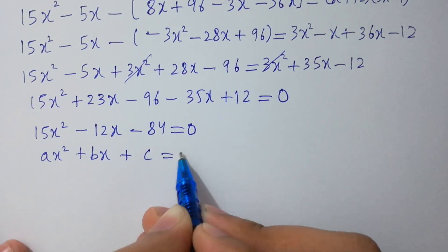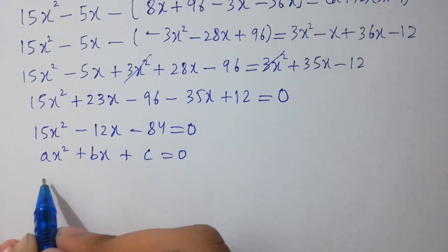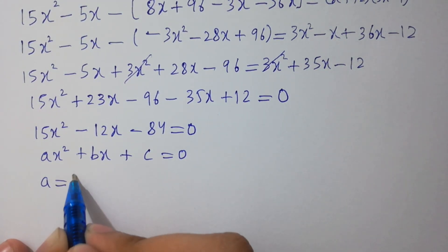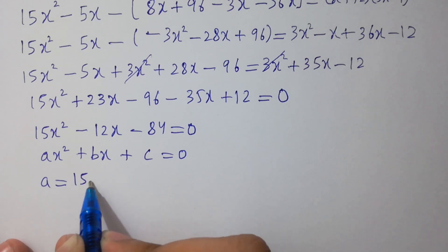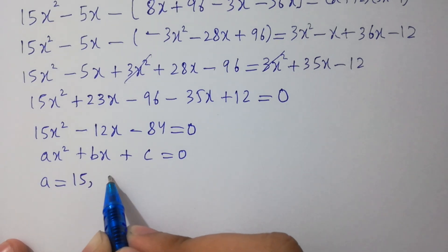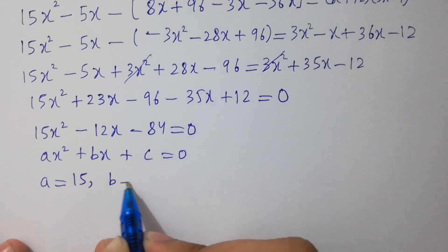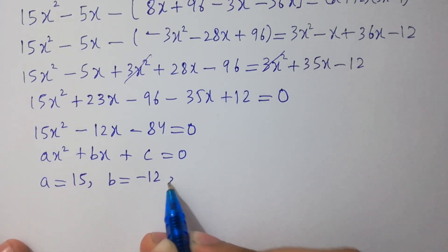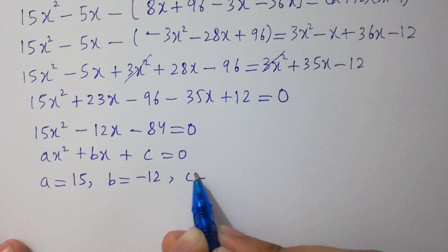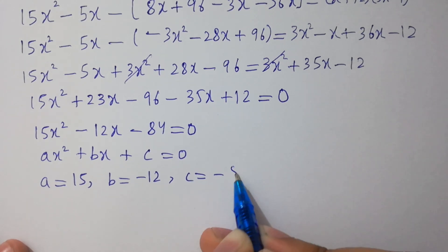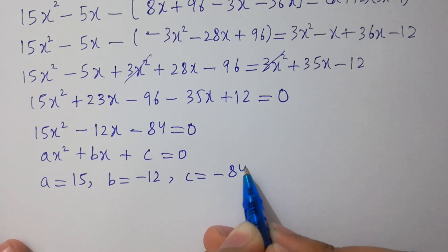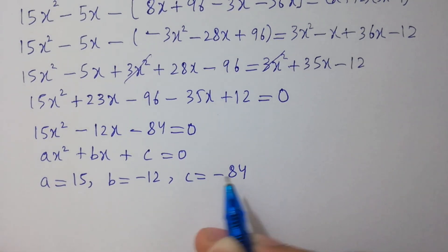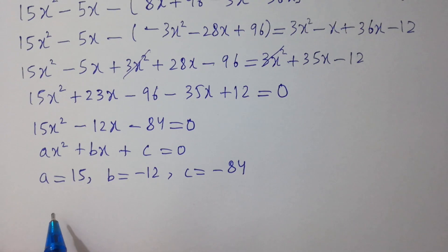Plus 12 equals 0. So: 15x squared, then 23x minus 35x equals minus 12x, minus 96 plus 12 equals minus 84, equals 0. This is a quadratic equation ax squared plus bx plus c equals 0. A equals 15, B equals minus 12, C equals minus 84.